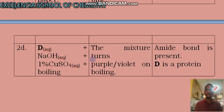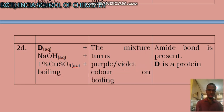When you boil this, you are going to see a purple solution or coloration. Or violet. Purple or violet. And then you have the amide bond is present. Amide bond is present. So you confirm that D is a protein. D is a protein.